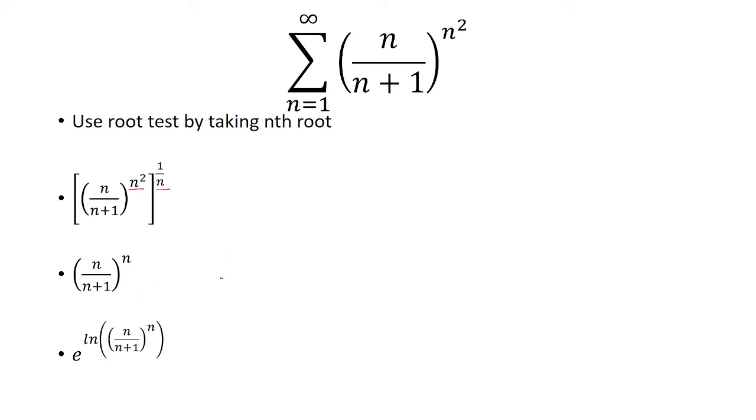And the next step, I know that e to the natural log of x is equal to x, but I'm going to replace x with n over n plus 1 raised to the nth power. So now, this is equivalent to saying e to the natural log of n over n plus 1, all raised to the nth power.